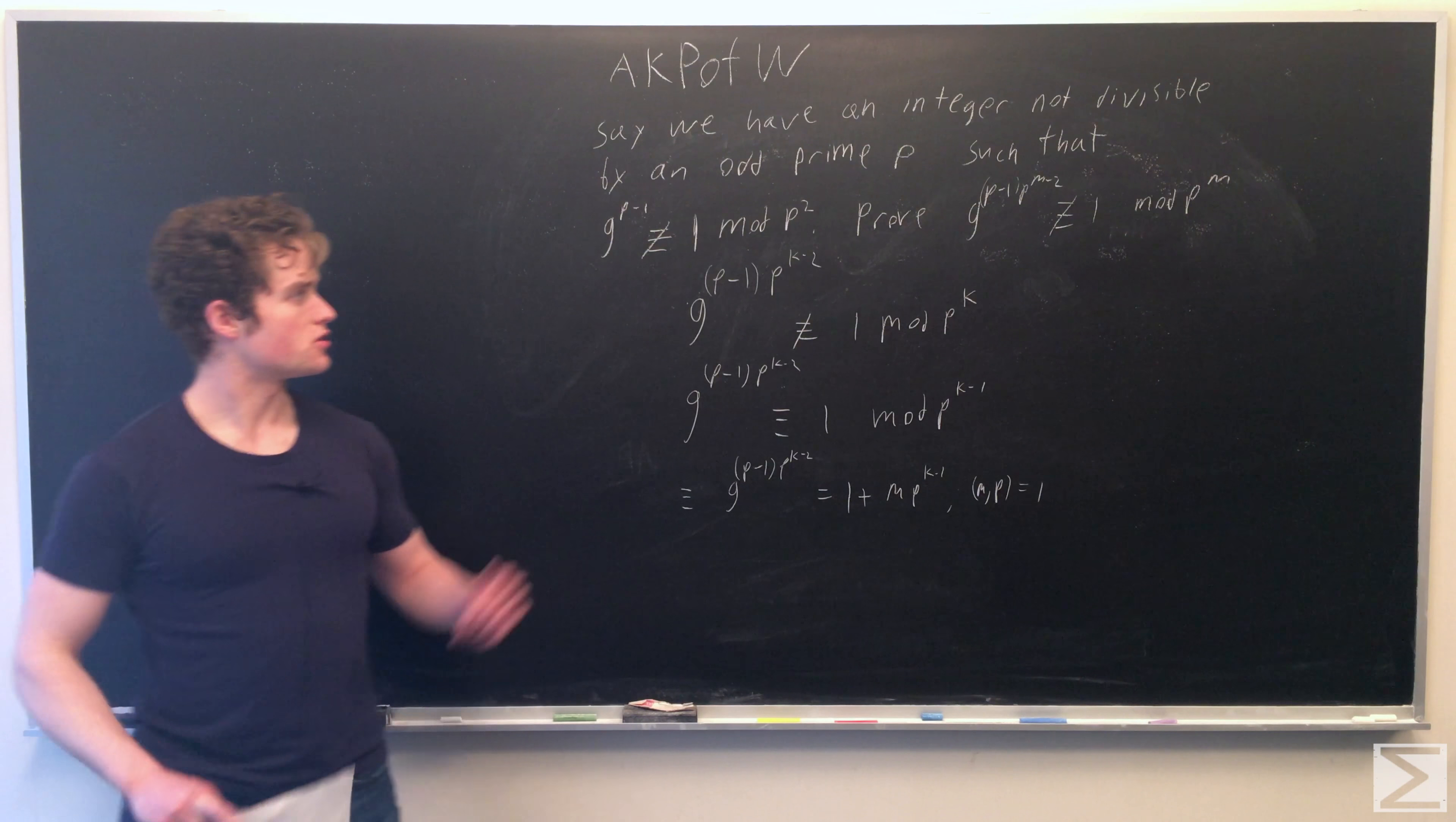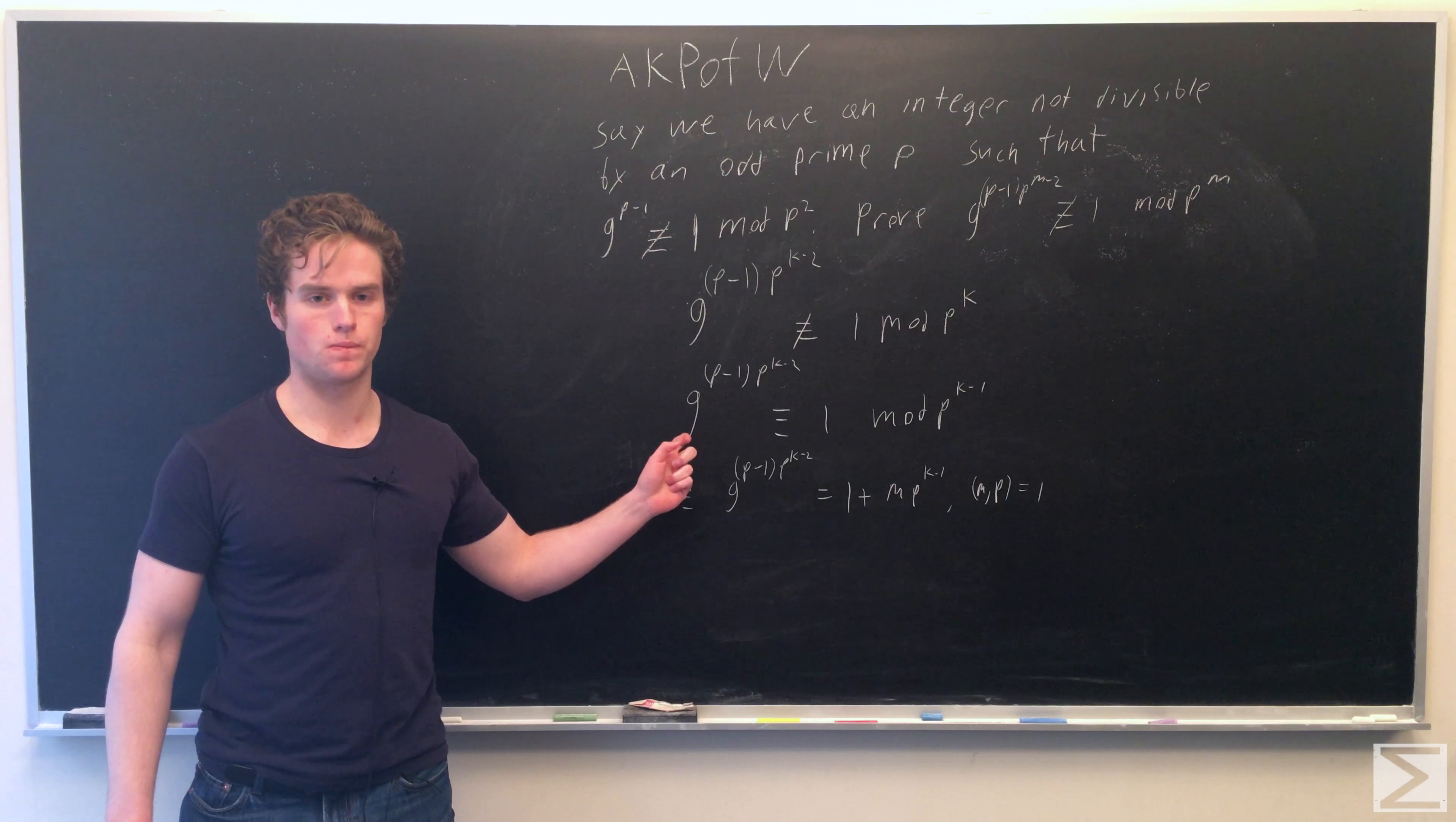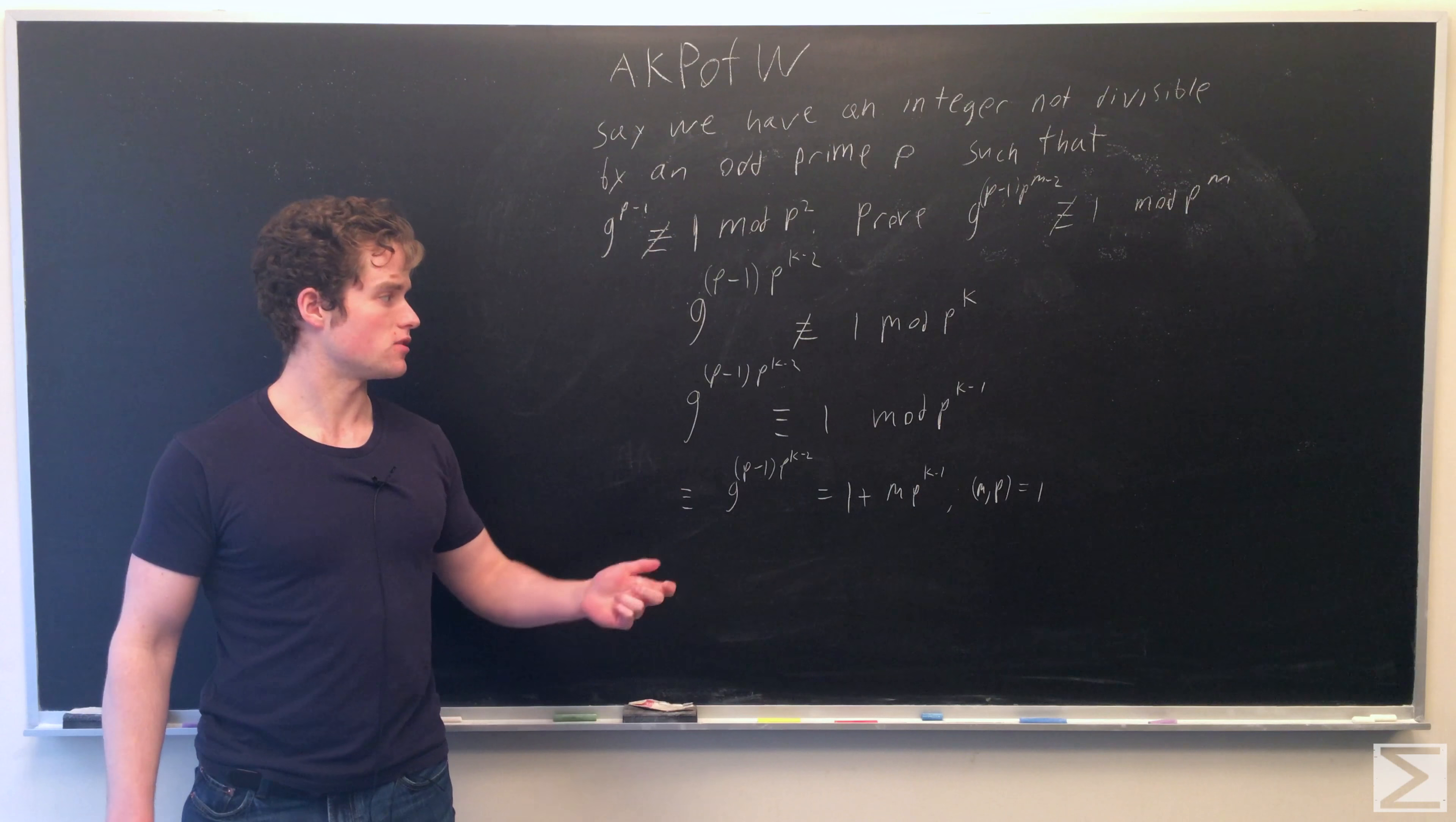We assume that g^(p-1)·p^(k-2) is not congruent to 1 mod p^k. But by Euler's theorem, we know g^(p-1)·p^(k-2) is congruent to 1 mod p^(k-1), because the totient function of p^(k-1) is p^(k-1) - p^(k-2).